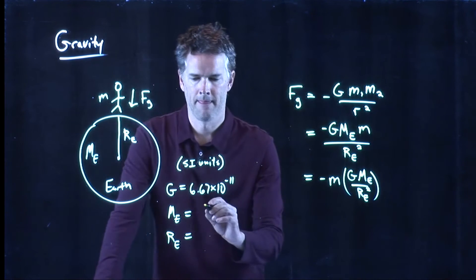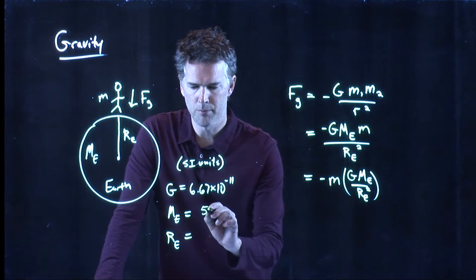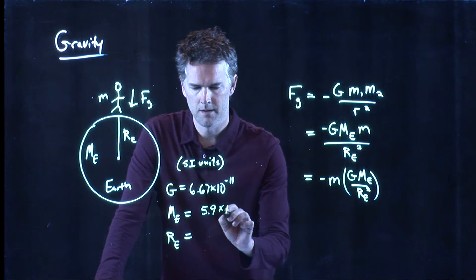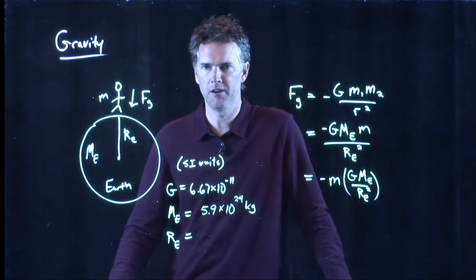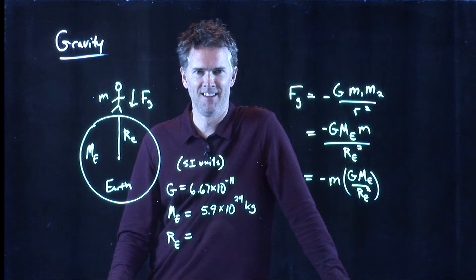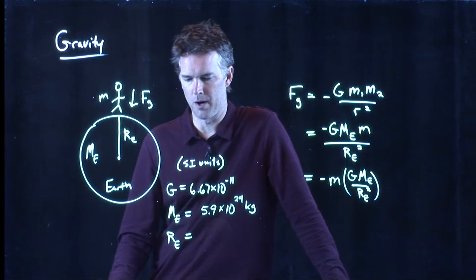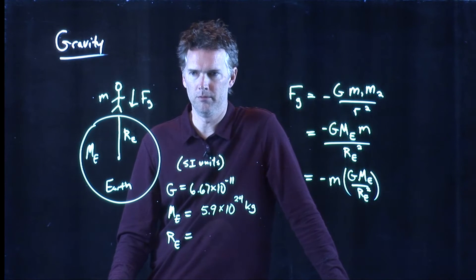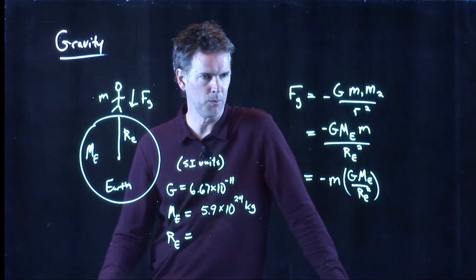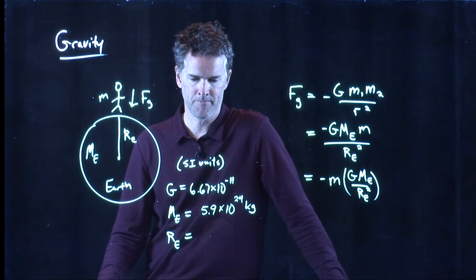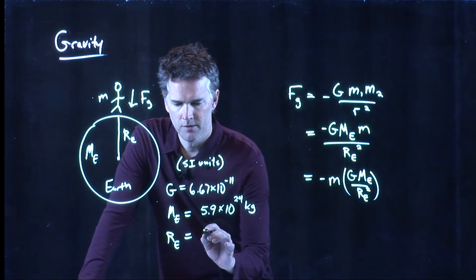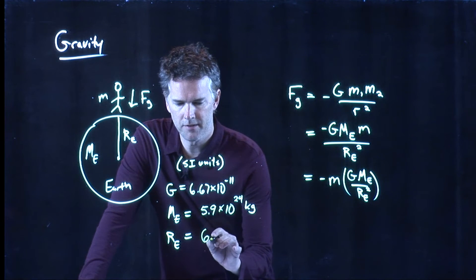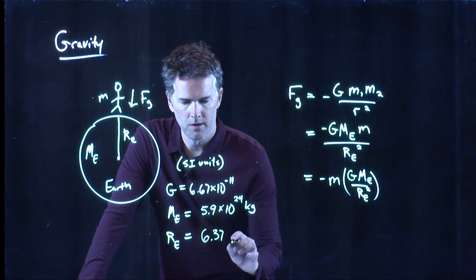5.9 times 10 to the 24th kilograms. Is that a reputable source you're getting that number from? It's the first thing that popped up from Google. Yeah, it's probably fairly reputable. If anybody else gets a different number, let me know. What about the radius of the Earth? 6,378.1 kilometers—okay.